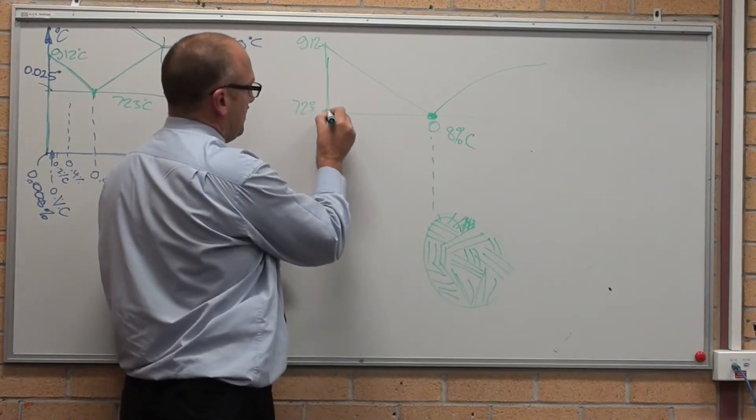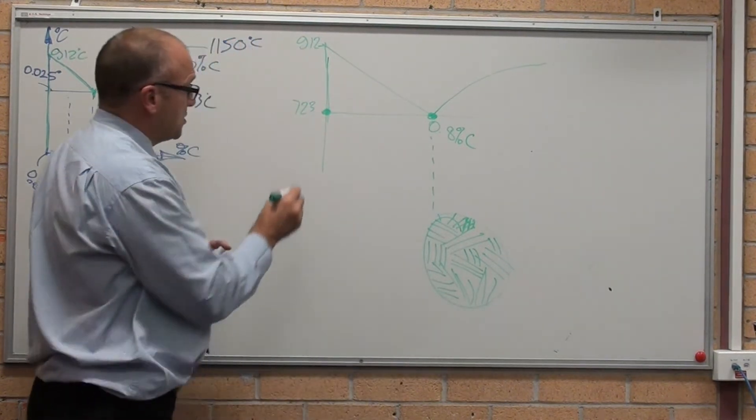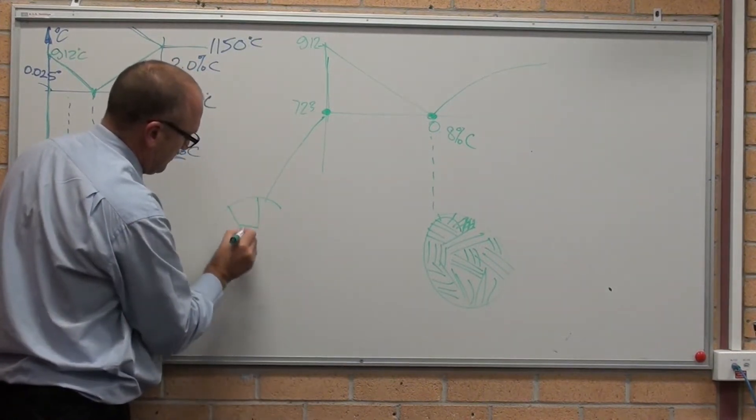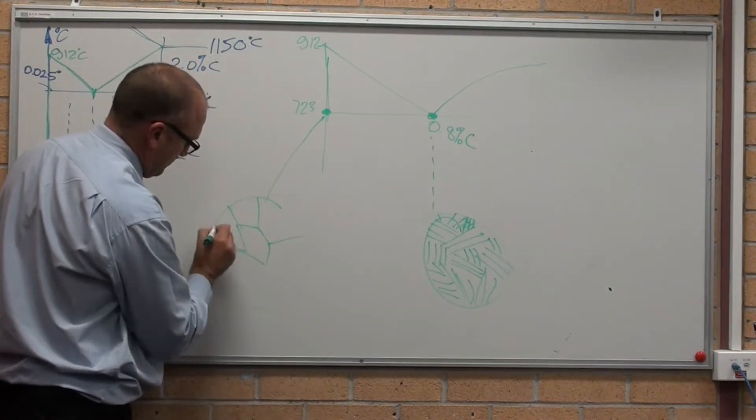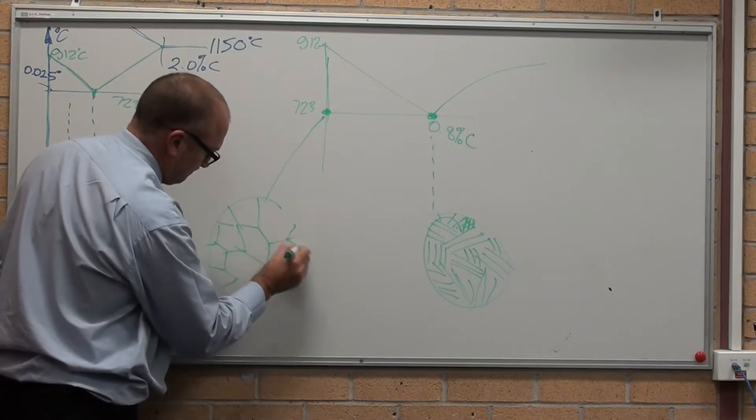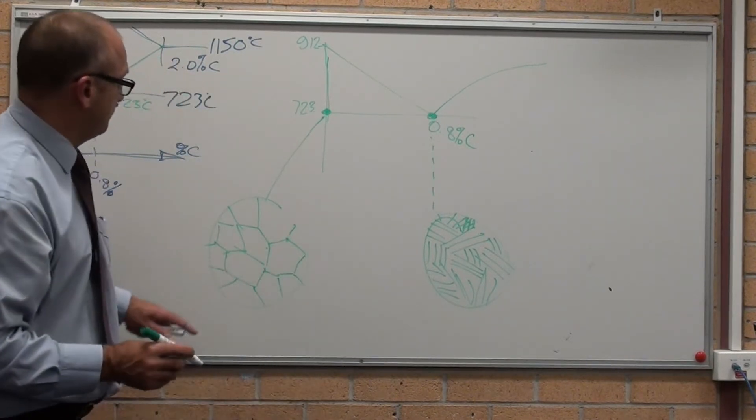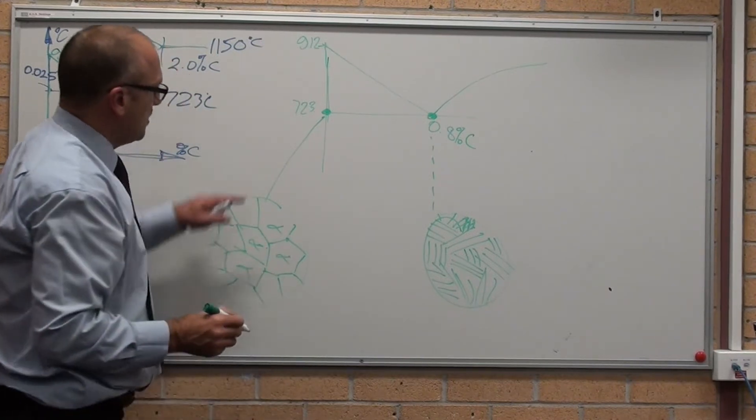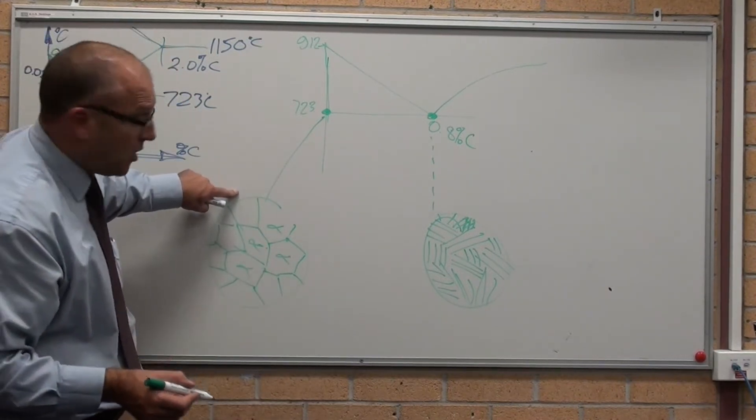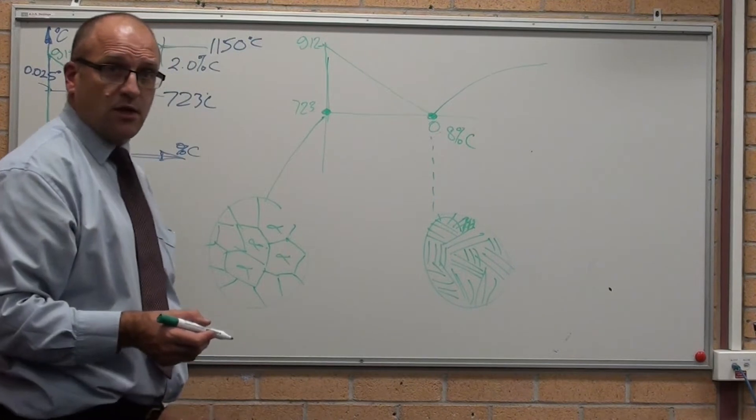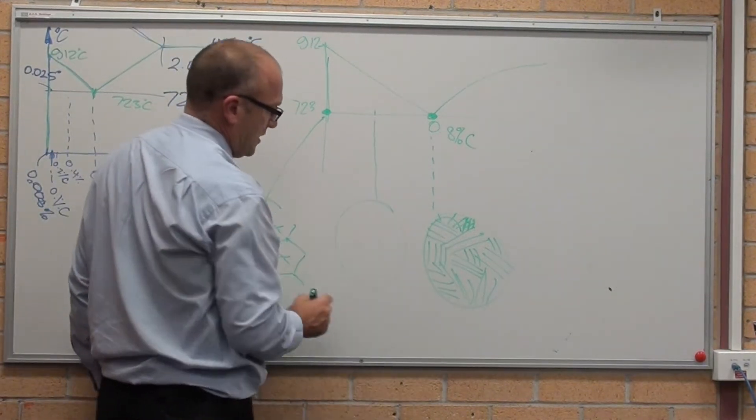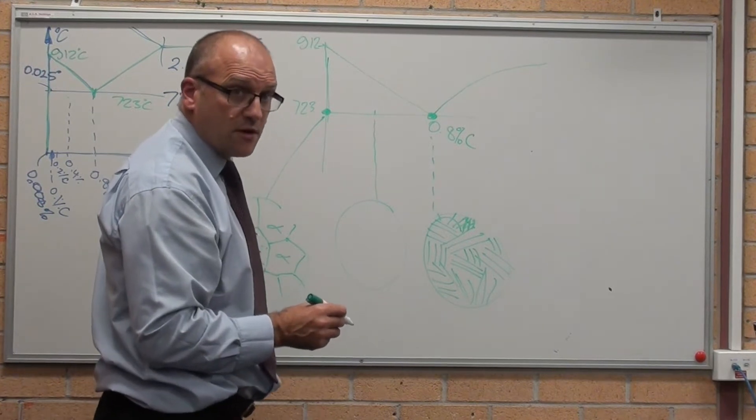Microstructure of a 0% carbon steel is 100% ferrite. So if that's 100% ferrite and that's 100% austenite, then halfway between the two, it's 50% ferrite, 50% austenite.